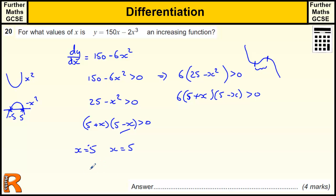So where x is between minus 5 and 5, then that's a gradient function. Actually, we don't want the equal sign because when it's equal to 0, that's not an increasing function, that's a stationary point. So we want it between minus 5 and 5.